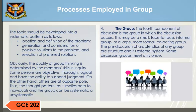The topic should be developed into a systematic pattern as follows: 4. Location and definition of the problem. 5. Generation and consideration of possible solutions to the problem. 6. Selection of preferred solutions. The quality of group thinking is determined by the members' skill in inquiry. Some persons are objective, thorough, logical, and have the ability to suspend judgment, while others are at the opposite pole. Thus, the thought pattern, as it applies both to individuals and to the group, can be systematic or unsystematic.